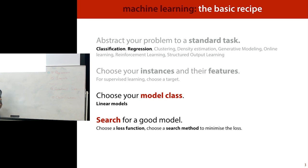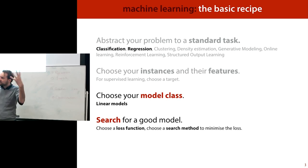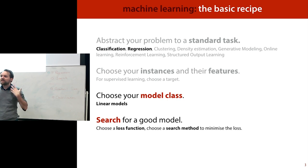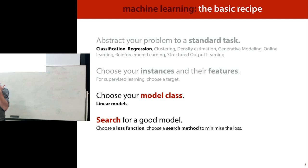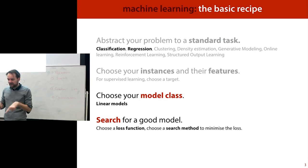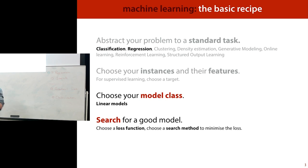So a little recap from last time. We talked about this basic recipe of machine learning: you take a problem, this generic use case, you abstract it to a standard task like regression or classification. You choose your examples — the things you want your model to learn from, called your instances. For every instance you measure a number of features, so your whole dataset looks like a table. Then you choose a model class, which gives you a whole space of models that you can fit to that data. Then you search that space for a good model.